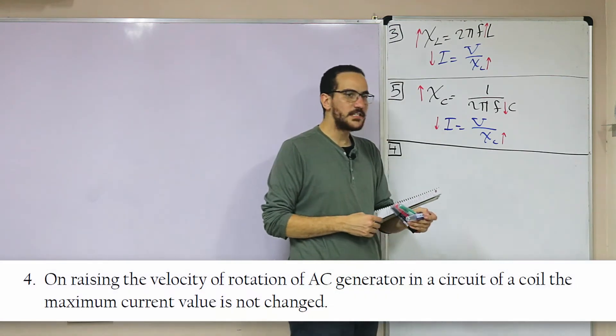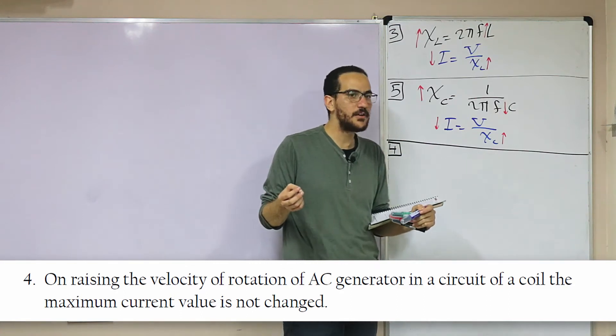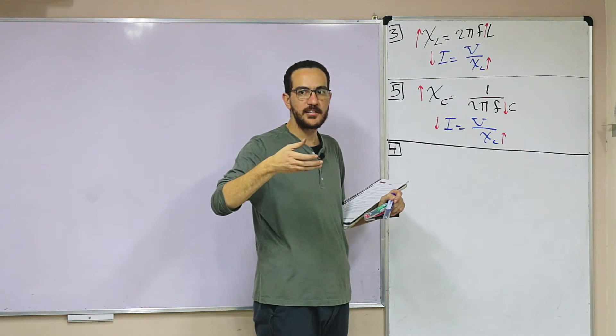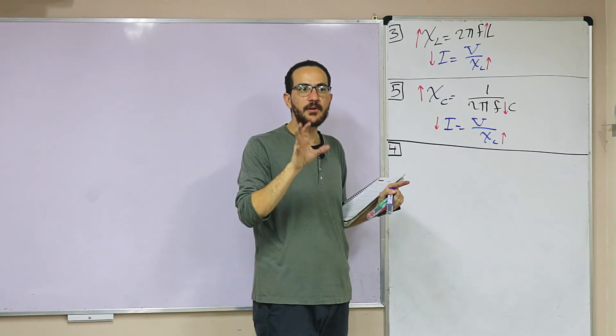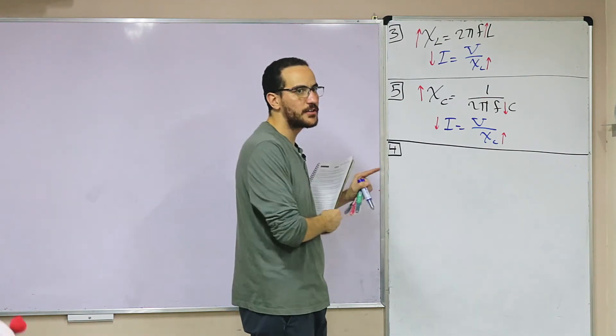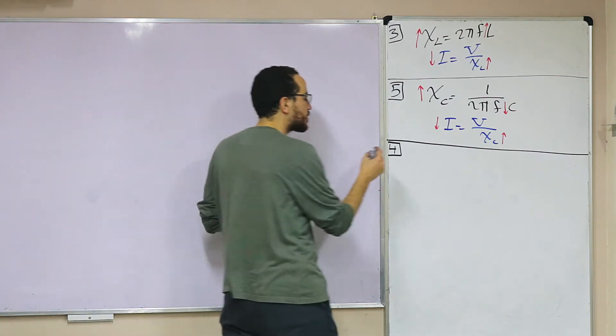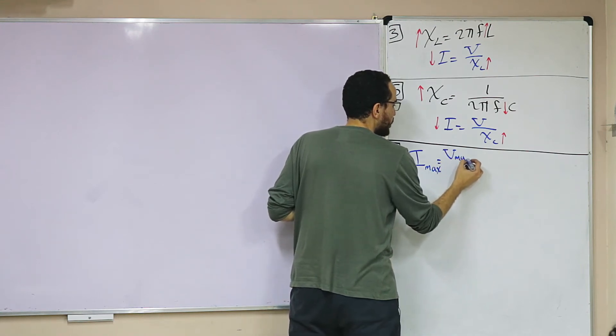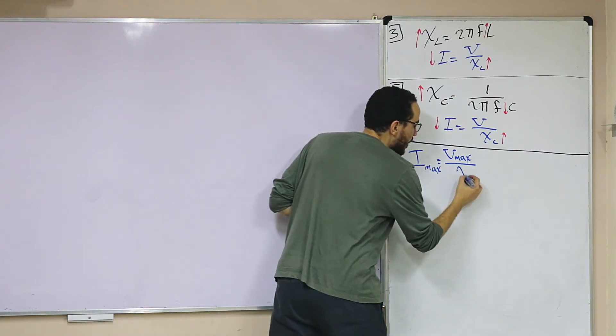On rising the velocity of AC generator in a circuit of a coil, the maximum current value is not changed. The current maximum, which he said, is about V maximum over XL because this is a coil.